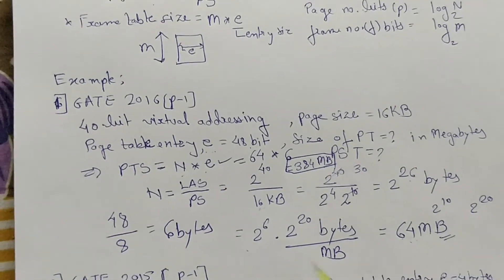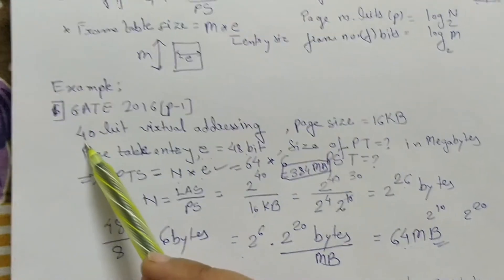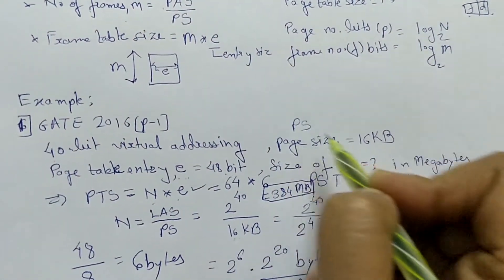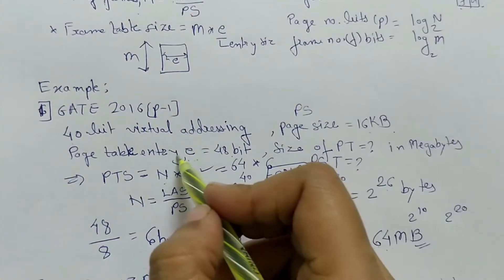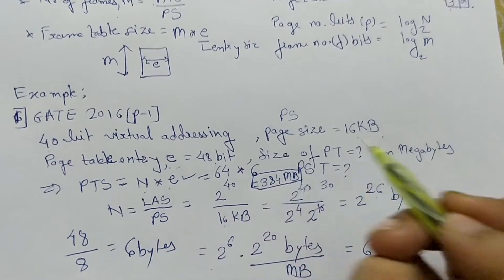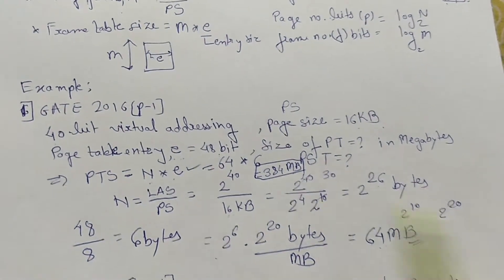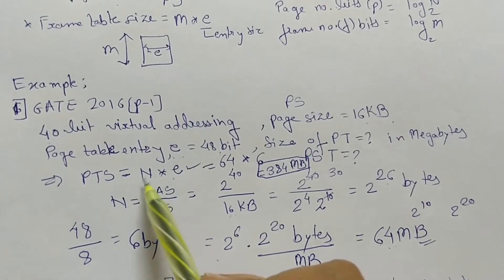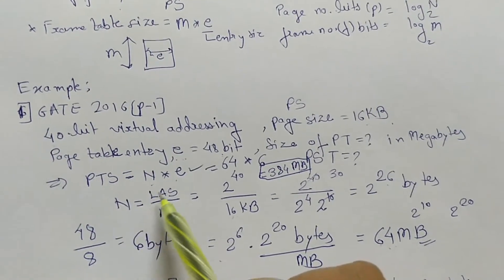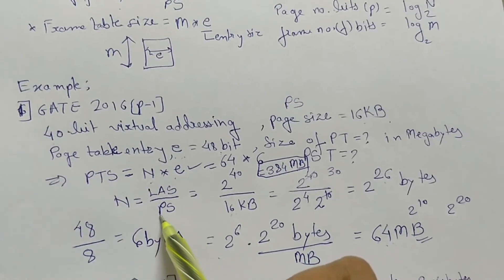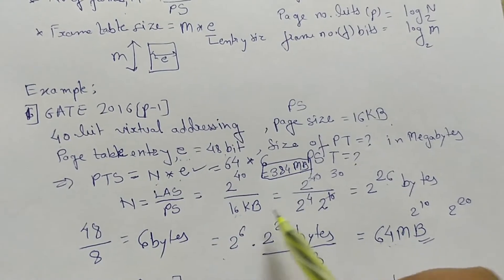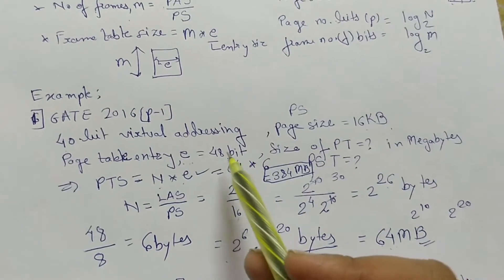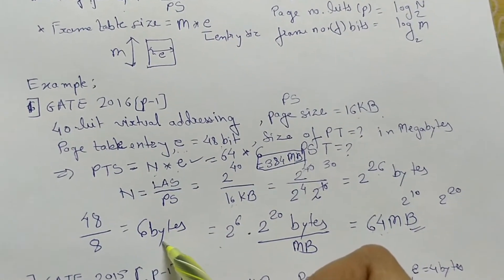To recap: virtual address space bits is 40, virtual address is the same as logical address, page size is 16 KB, page table entry small e is 48 bits. Page table size formula is N into E. E is already given; we find capital N as logical address space divided by page size. We converted the answer to megabytes and also converted E from bits to bytes (48 bits = 6 bytes), giving a final page table size of 384 MB.